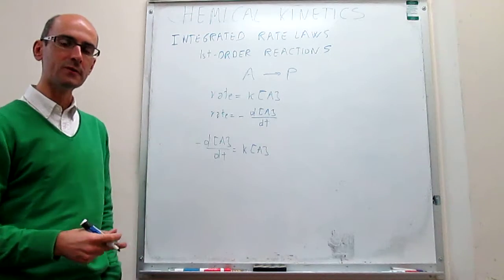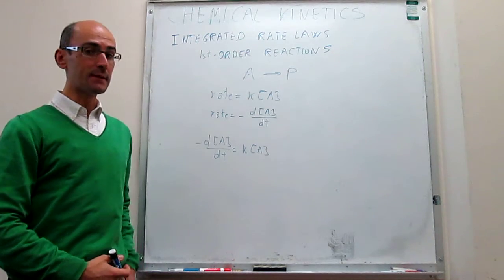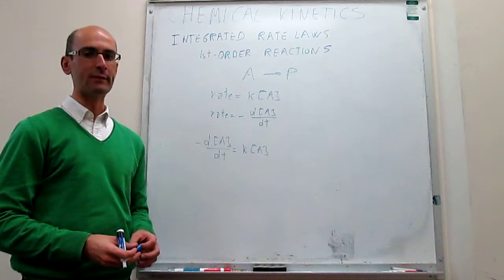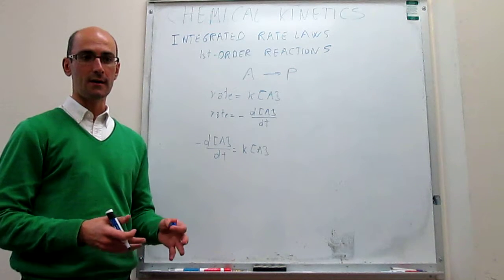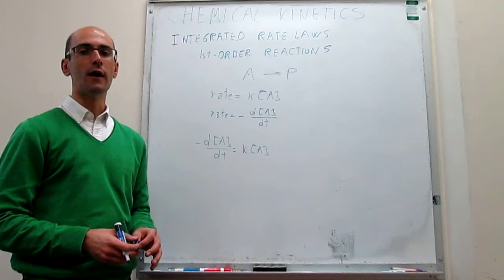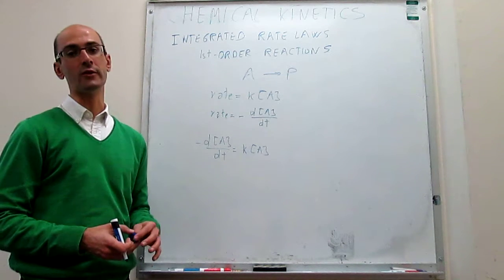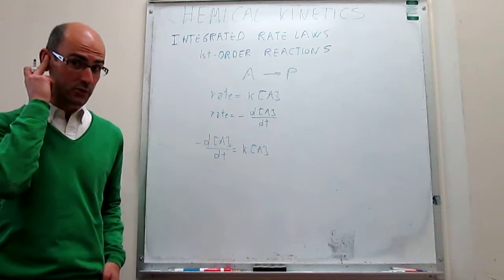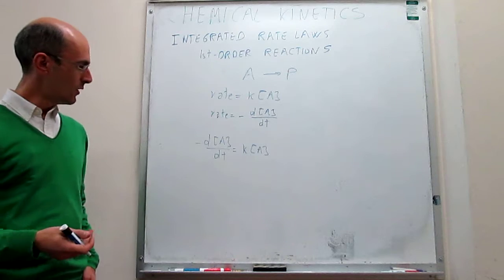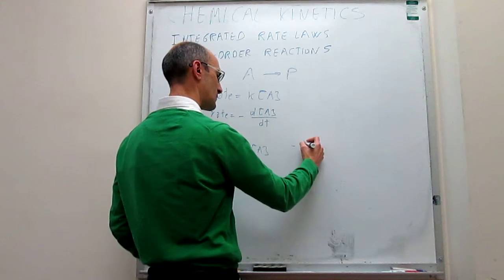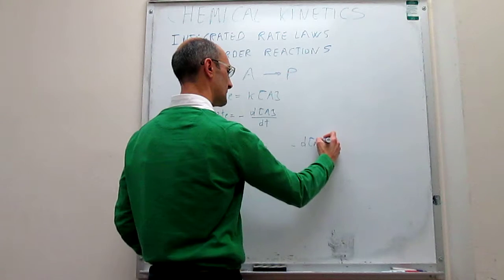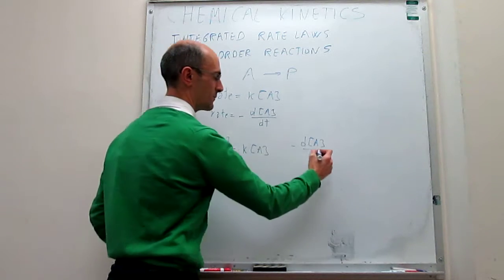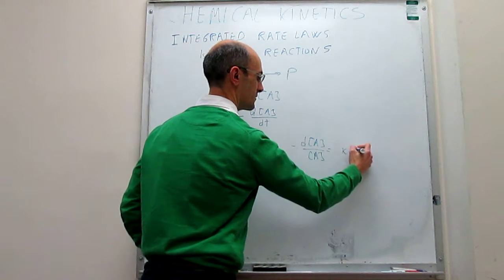This is a differential expression that we can integrate to obtain an explicit dependence of the concentration of A as a function of time, which will be very useful because it will allow us to predict exactly how the concentration of the reagent depends on time and how fast it will disappear. So we simply have to integrate this expression, and as always, we start by separating variables — grouping concentrations on the left-hand side and time on the right-hand side, giving us d[A] over [A] on the left and k dT on the right.